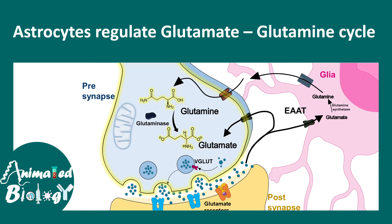Astrocytes are not a homogeneous population — they are highly heterogeneous. Thanks to single-cell RNA sequencing from human and mouse brain, it is now clear that there are different subtypes and subclasses of astrocytes, each present in different proportions in different brain regions, leading to astrocytic diversity. Scientists are still working to understand the correlation between this diversity and functional specialization of astrocytes and how they regulate overall brain function.